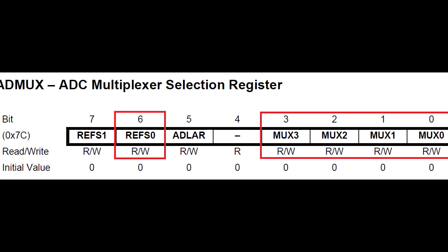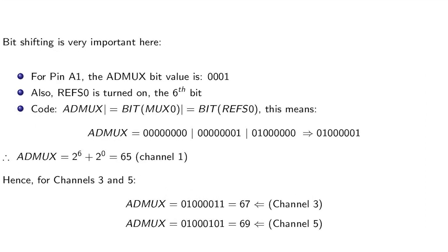Here we have the ADMUX channel selection. For pin A1, the ADMUX value is 0001. We also have REFS0 turned on, which is the sixth bit. So if you activate these two, the ADMUX will become 01000001. The ADMUX value will be 2^6 + 2^0, which equals 65. For channels 3 and 5, the last four bits would change. So you would have 0011 and then 0101. The values will be 67 and 69. So basically, for channel 1 you have ADMUX = 65, for channel 3 you have 67, and for channel 5 you have 69.